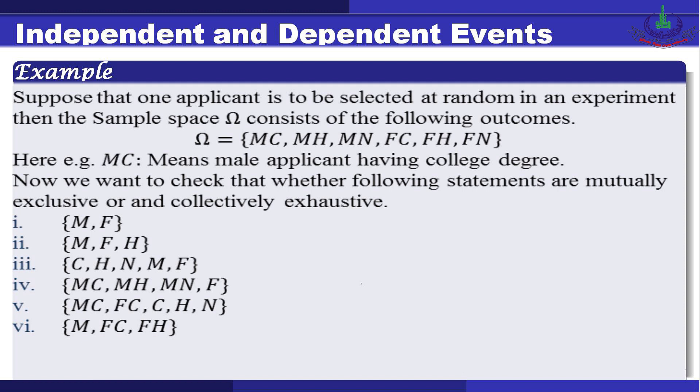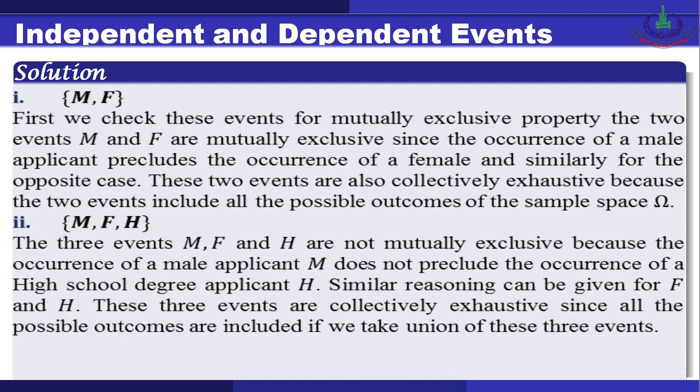For the first set {M, F}: these events are mutually exclusive since the occurrence of a male applicant precludes the occurrence of a female, and vice versa. They are also collectively exhaustive because together they include all possible outcomes of the sample space, since it consists entirely of males and females.